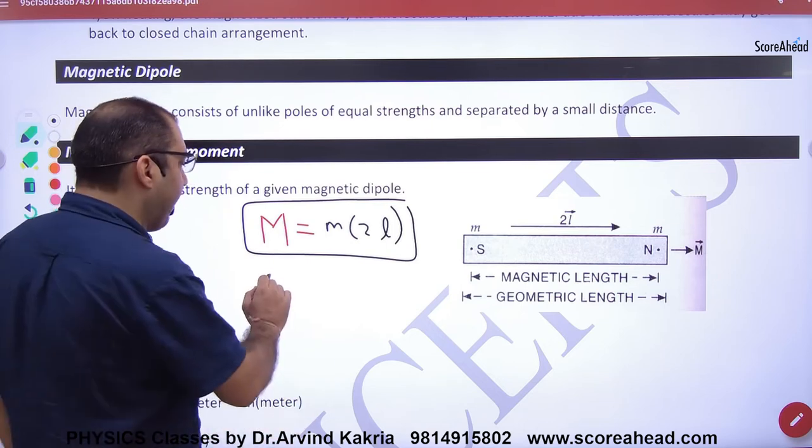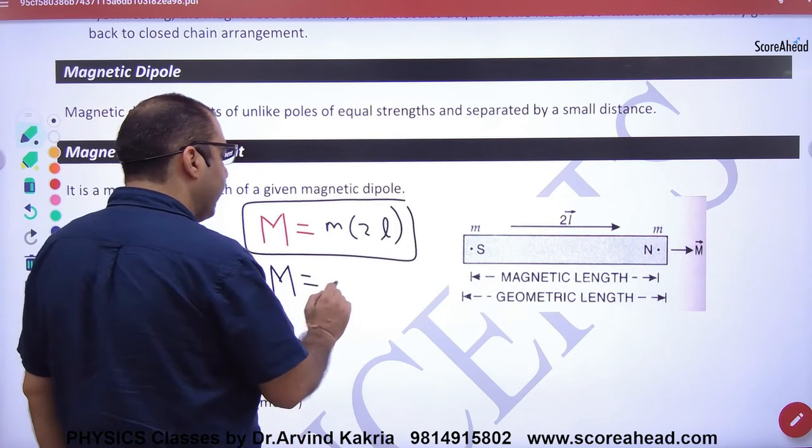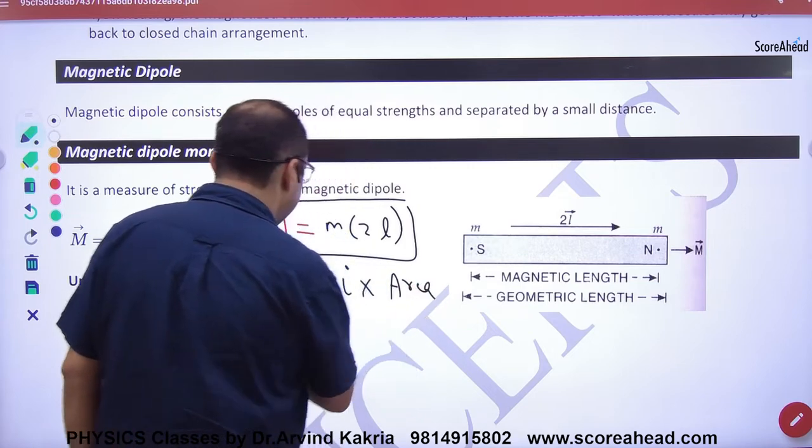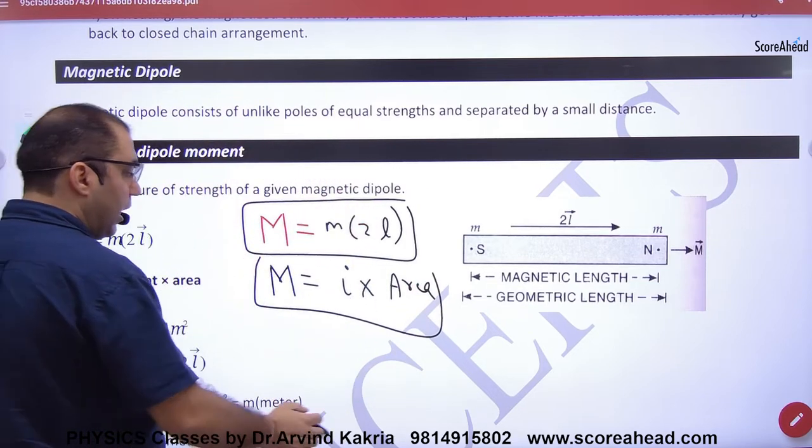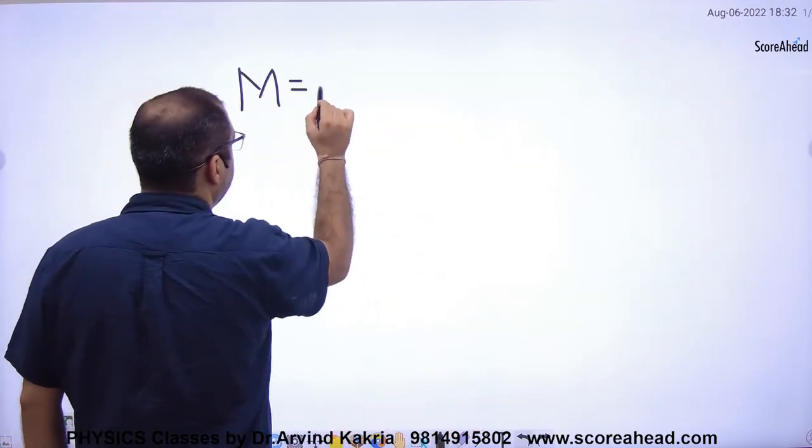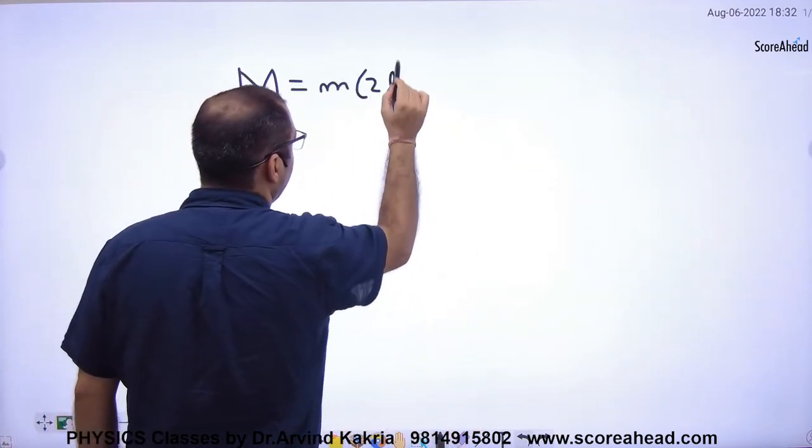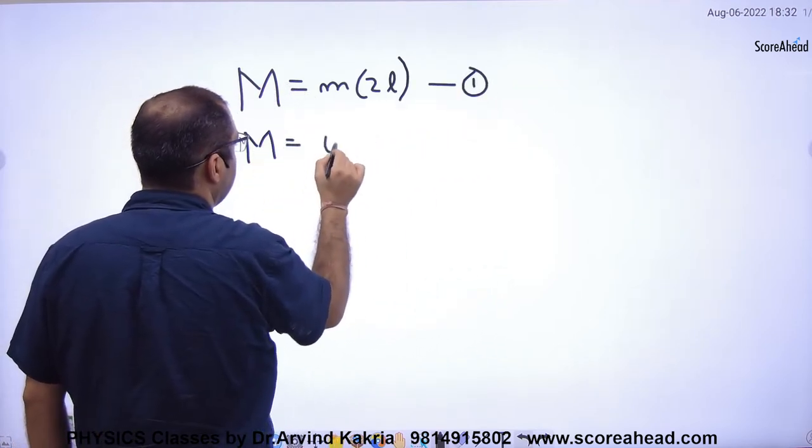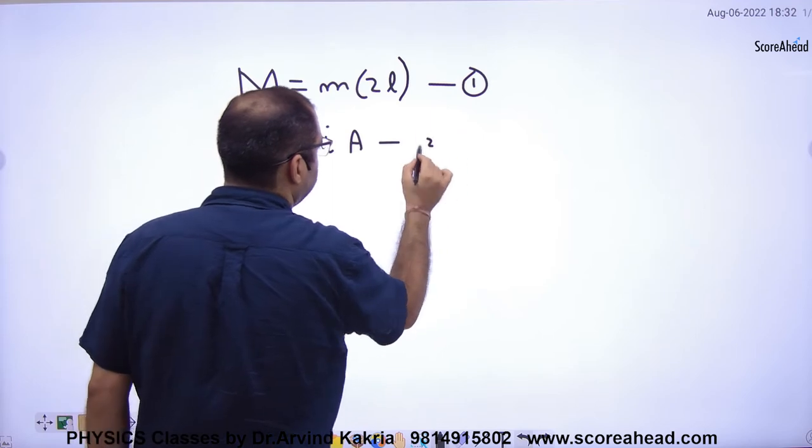Now the other way to remove capital M is another way. What is current into area? Right? So tell me one thing, that you have two ways to remove capital M. The first way to remove pole strength into 2L, and the second way to capital M current into area.